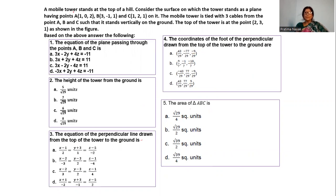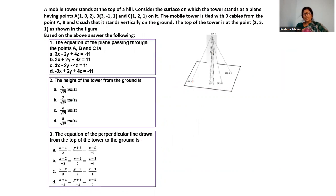Let us read the question again. A mobile tower stands at the top of the hill. Consider the surface on which the tower stands — the plane has points A, B, C. The mobile tower is tied with three cables from points A, B, C such that it stands vertically on the ground. The top of the tower is at point P(2, 3, 1). From the figure: A is (1, 0, 2), B is (3, −1, 1), C is (1, 2, 1), and P is (2, 3, 1).